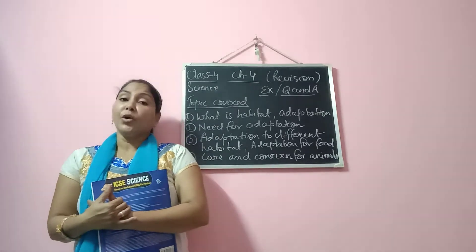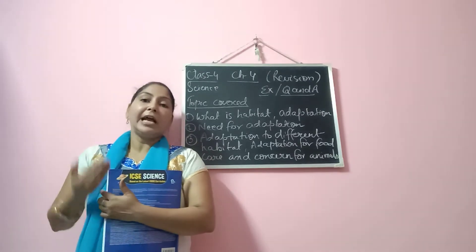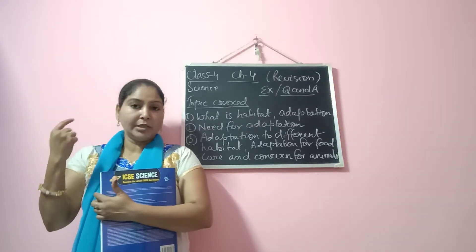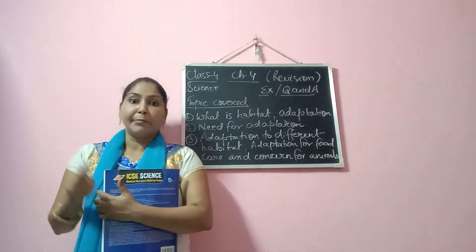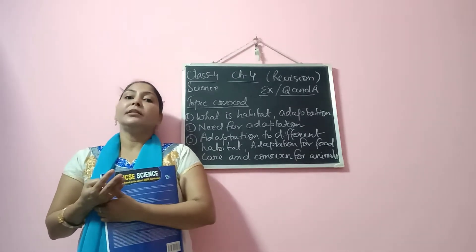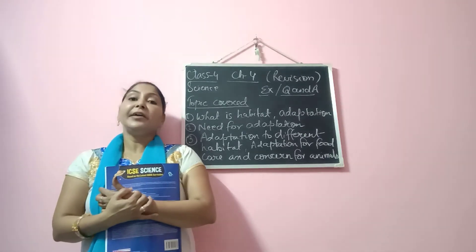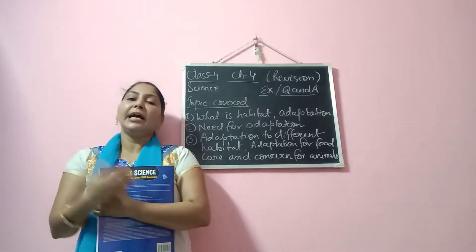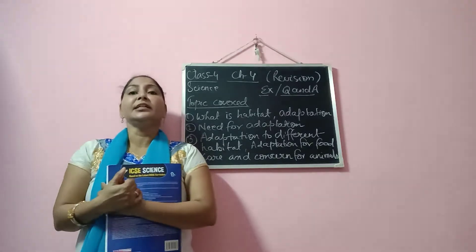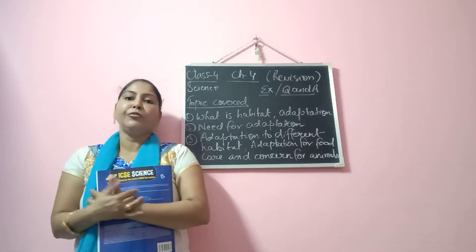We have also learned adaptation to different habitats. We have learned about four types of habitat, and the animals and their adaptive features. We learned about terrestrial animals and their adaptive features, and similarly we have learned about aquatic animals, amphibian animals, and aerial animals and their adaptive features. We have also learned adaptation for food — there are three kinds of adaptation for food.